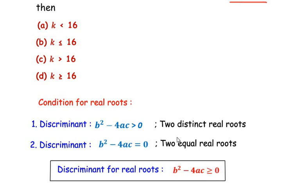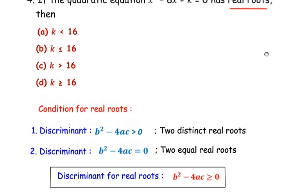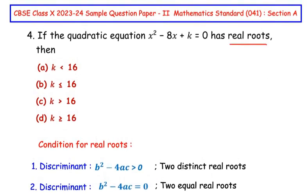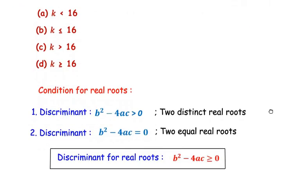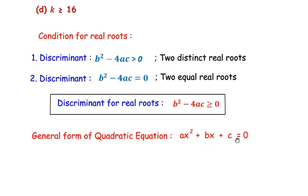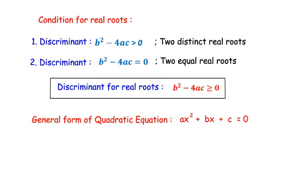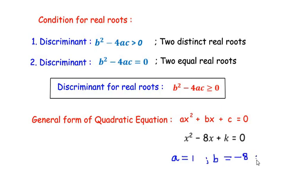Now we need to identify a, b, and c from the given expression. The general form of a quadratic equation is ax² + bx + c = 0, and our equation is x² - 8x + k = 0. By comparison: a = 1 (coefficient of x²), b = -8 (coefficient of x), and c = k (the constant term).